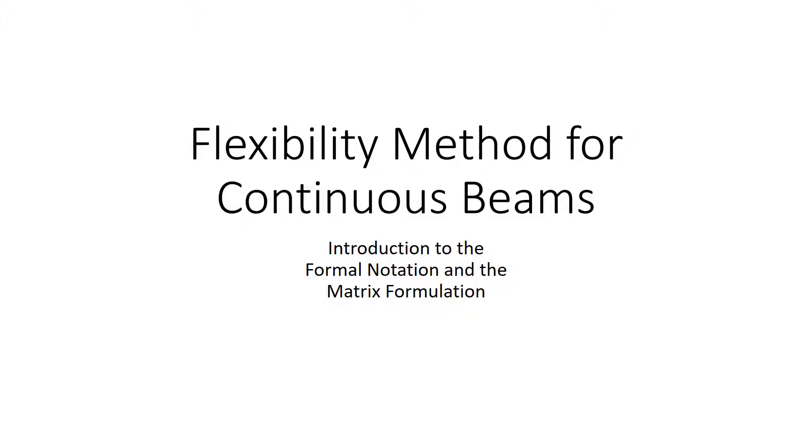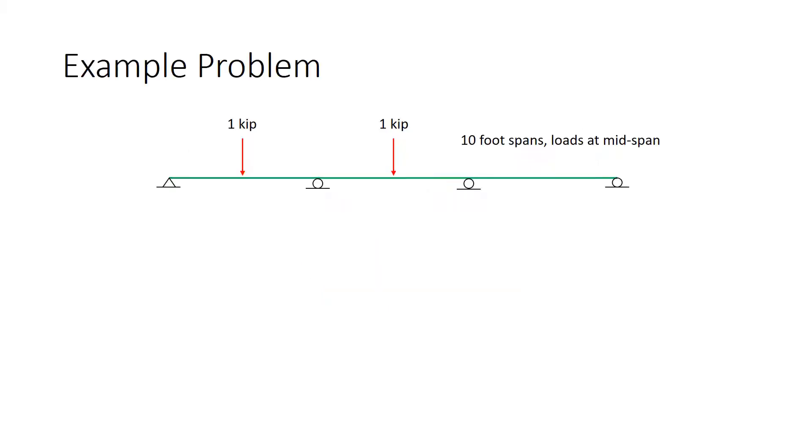Here we have multiple degrees of indeterminacy, and that requires a more formal approach. This is our example problem. It's a three-span continuous beam. These are 10-foot spans, and we have loads at mid-span. There are loads of one kip on the left-hand spans.